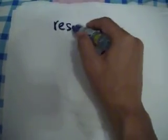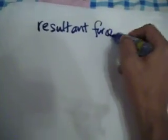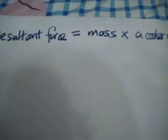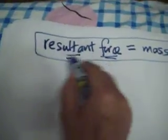Okay, hi. Now we're going to revise this very important formula: resultant force equals mass times acceleration, which in short we usually say F equals MA. Now actually, it's not only F, it's a resultant force.